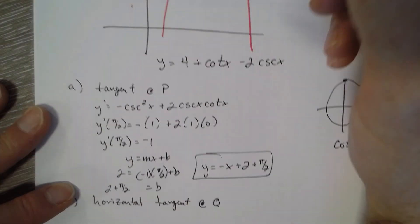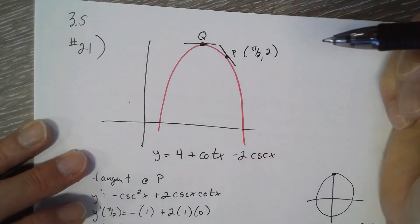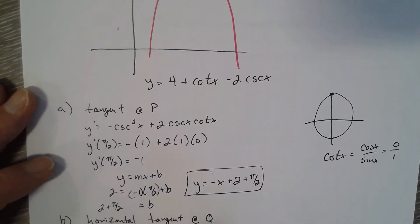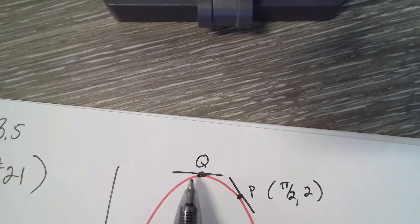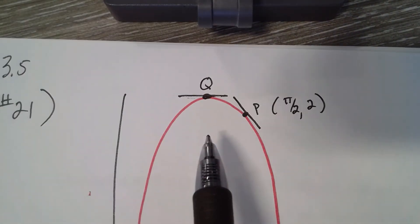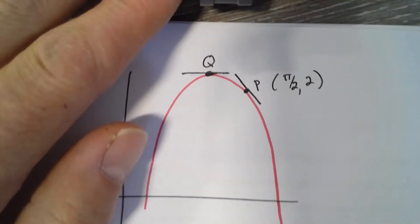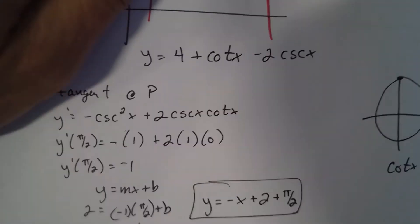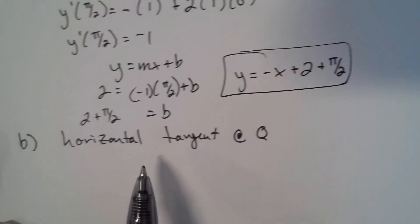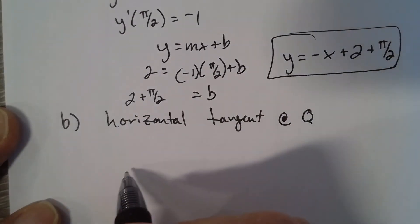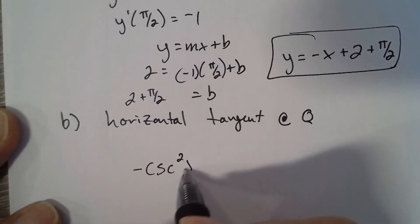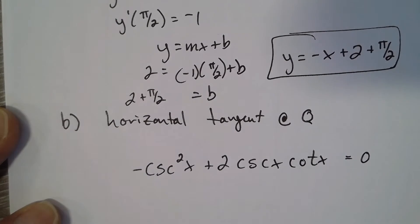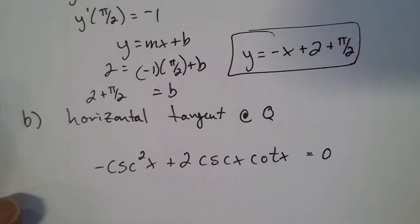For Part B, we want the equation of the horizontal tangent at Q. We know the derivative equals 0 for a horizontal tangent. Using the derivative we already found, we set it equal to 0 and solve. We can factor out a cosecant x.